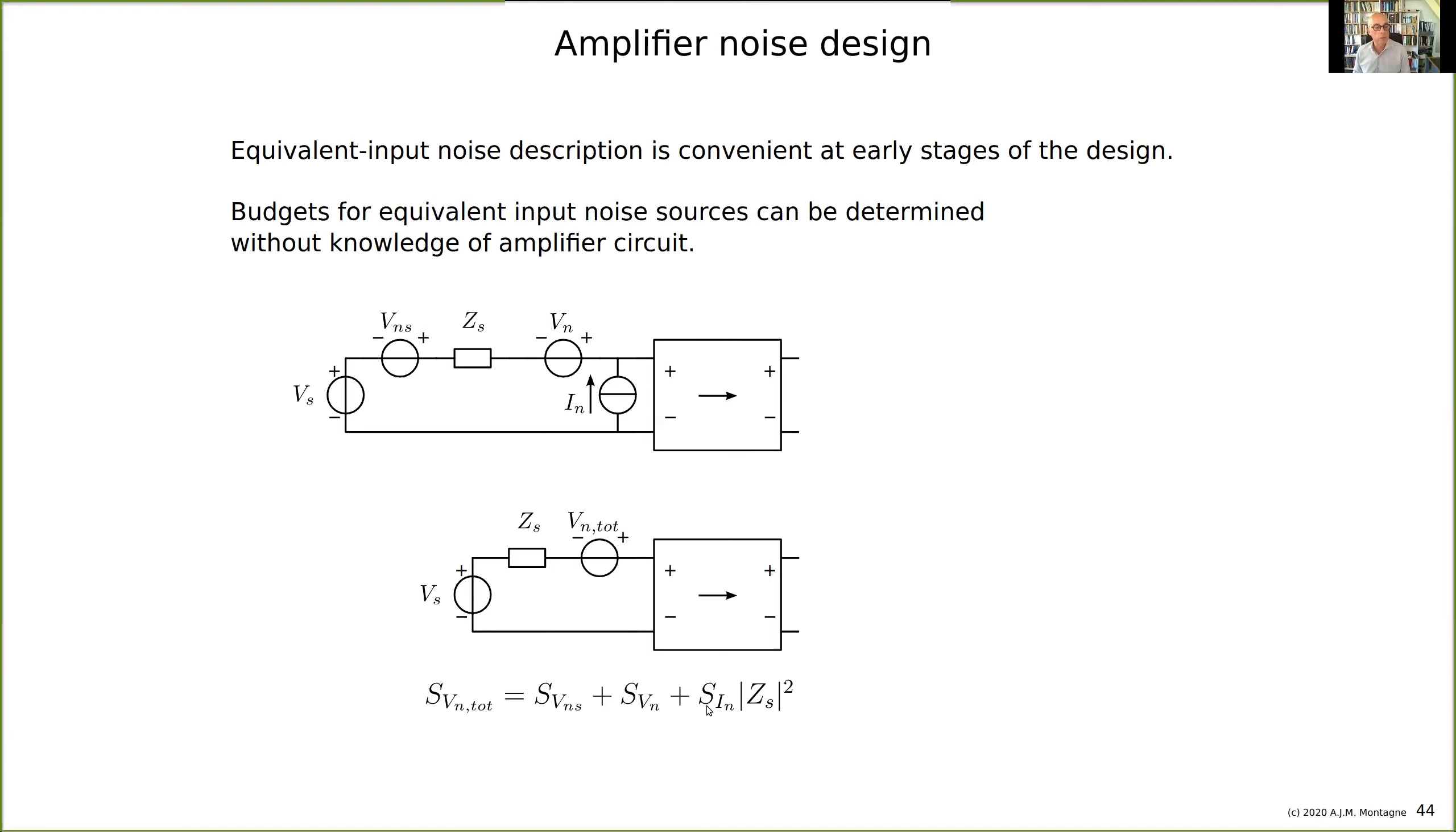The noise figure is the weighted signal-to-noise ratio, with a weighting function. In audio, for example, we are not very sensitive to low frequencies. We are more sensitive in the range between 300 Hertz and 3 kilohertz. Above and below that range, sensitivity drops.